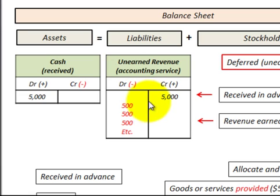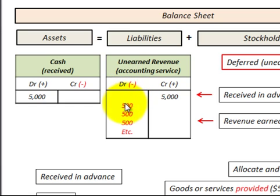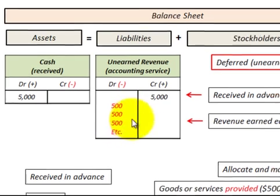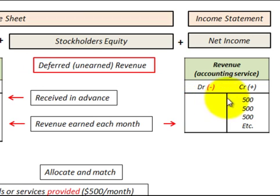After we receive the cash and start providing the goods or service — in this case $500 per month — we debit or decrease unearned revenues by $500 per month. The corresponding credit entry goes to the revenue account, and it becomes earned revenue at $500 per month.